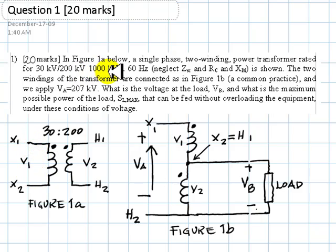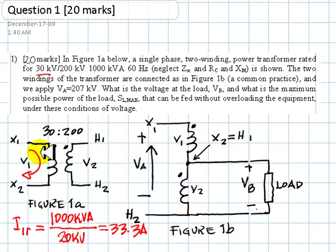1,000 kV divided by 200 kV, that is 5 amps, that is the maximum safe current for this one. So, the safe maximum current, or rated current of the primary, is 33.3 amps.